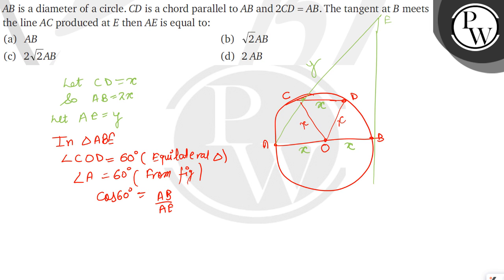As cos 60 is base upon hypotenuse, we can say that cos 60 is equal to AB upon AE. Putting the value of cos 60 as half and AB as AB and AE as Y, from this equation we can say that half is equal to AB upon Y.